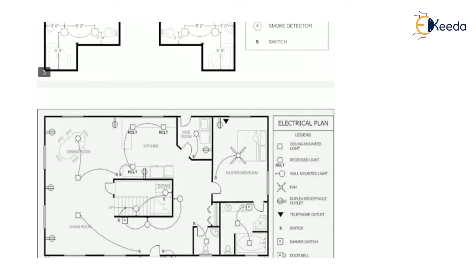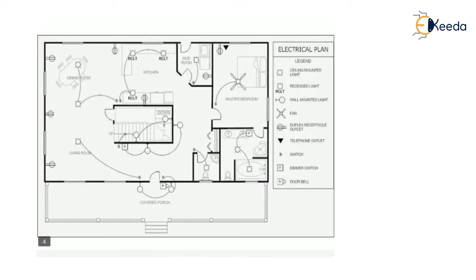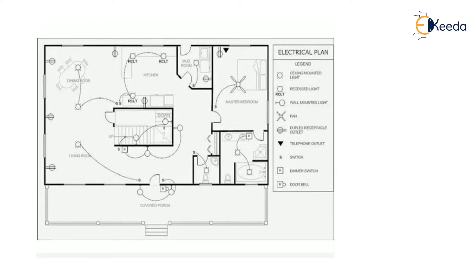This is another plan of an electric layout. Here, a circle with an outer line indicates a wall mounted light. This symbol indicates the ceiling mounted light, and this is the fan symbol. There is also a telephone outlet. Likewise, we can make our electric plan according to the owner's requirement using different types of symbols.